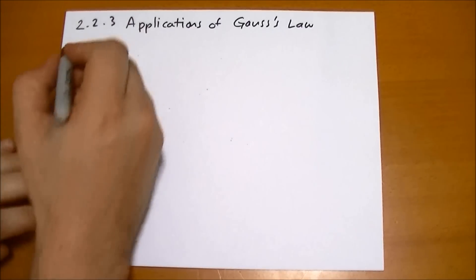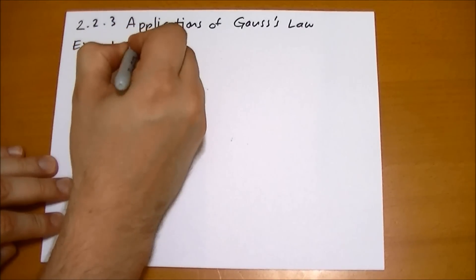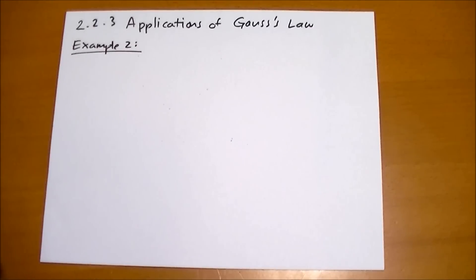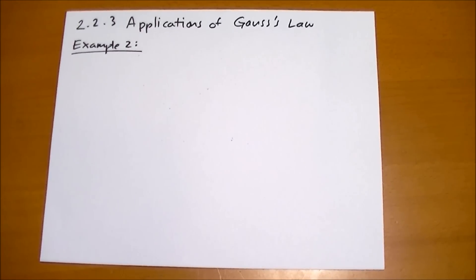Example two is basically the same as problem 27, I believe. Let me go back and double-check. Yes, it's the same as problem 27, which is a hard problem, but we're going to solve it here with just hand-waving and smiles, thanks to Gauss's Law. So we have a spherical surface of radius R.